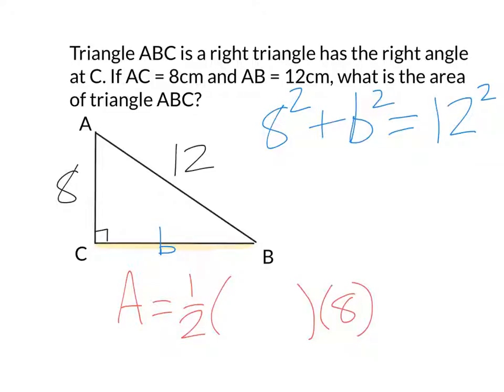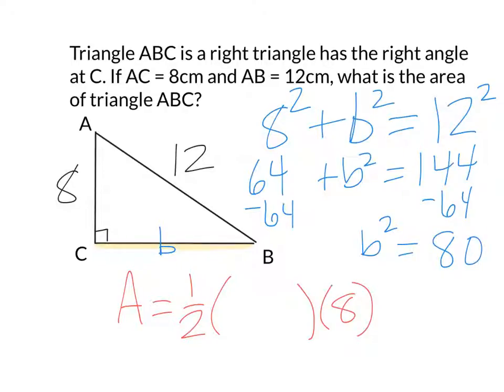So I square both the legs, that gives me 64 plus B squared equals 144. I subtract 64 from both sides, B squared is equal to 80.